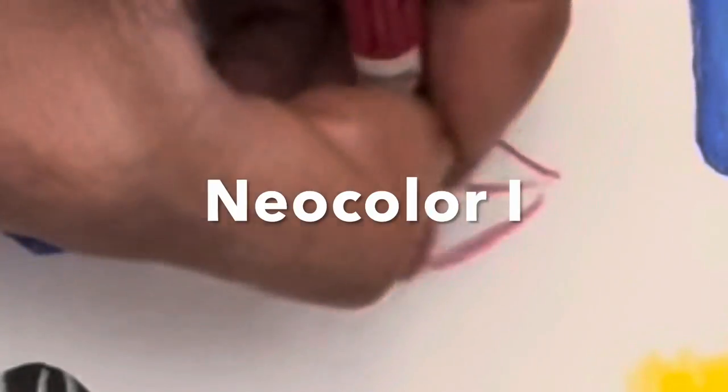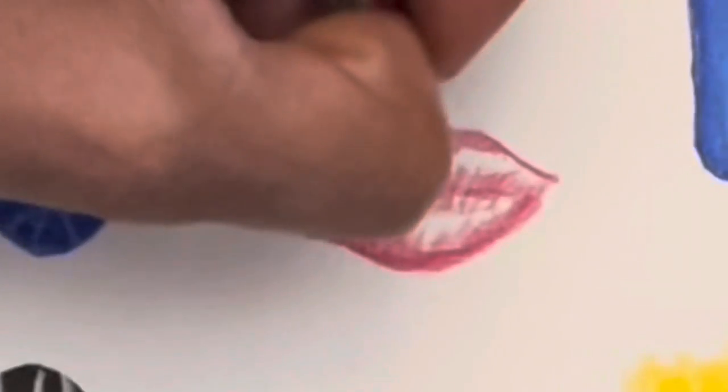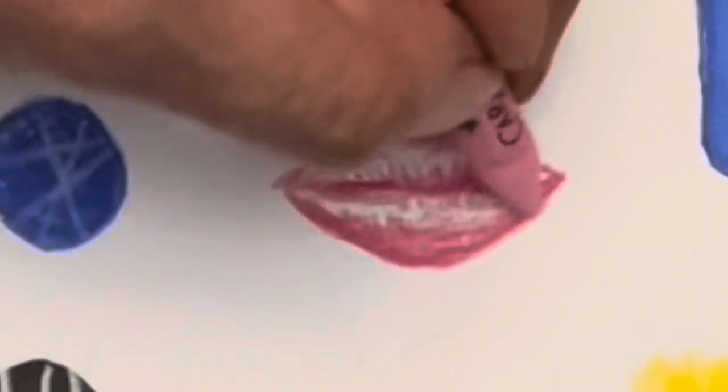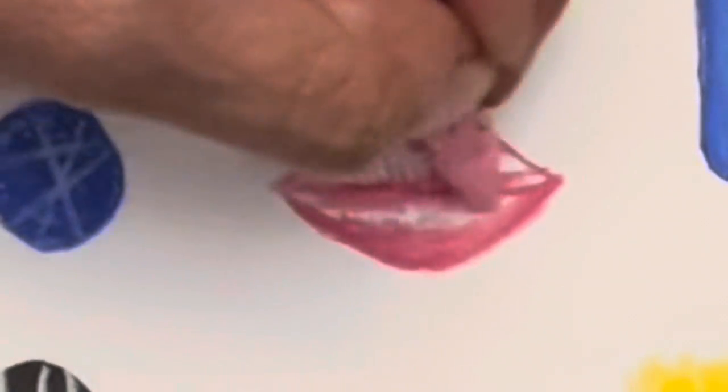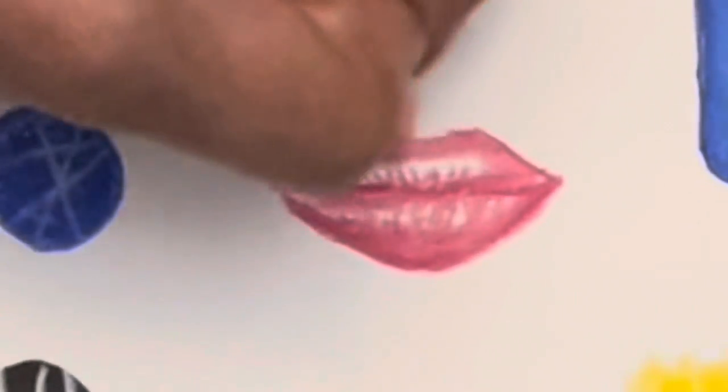I decided to create a quick little drawing with the Neocolor 1 wax pastels. I wanted you to look at the process. I just started using the carmine and creating some details. Then I brought in the pink wax pastel and started blending out the edges and adding some lighter values on the inside of the lips to make it more three-dimensional.